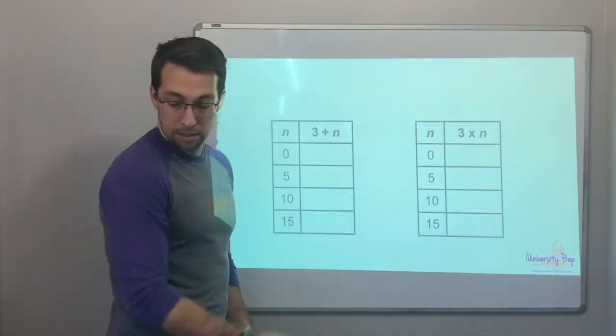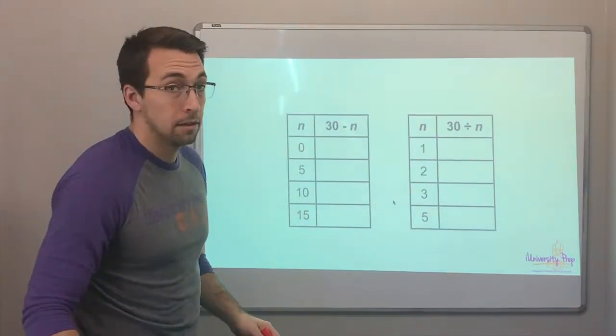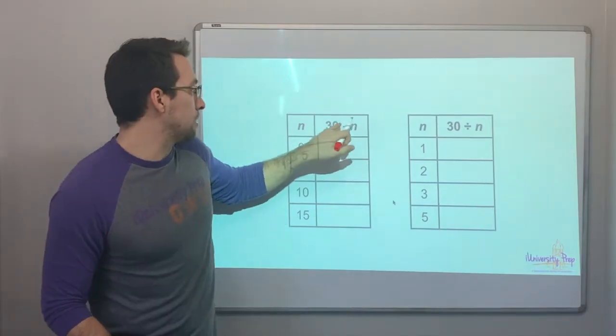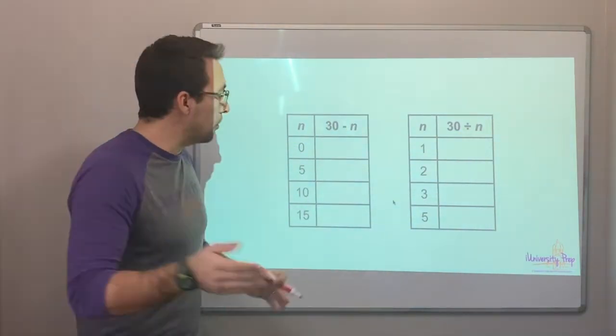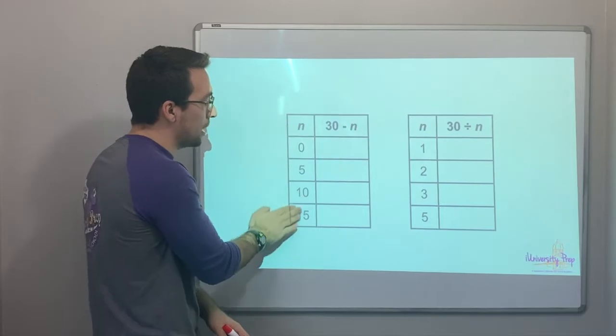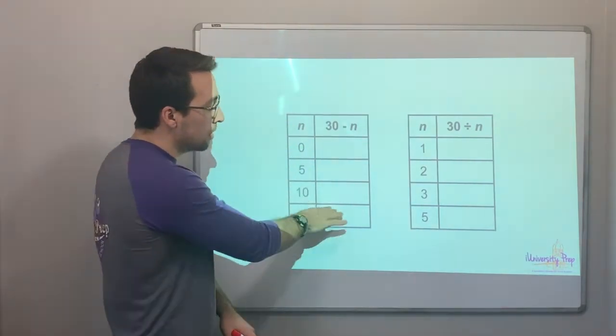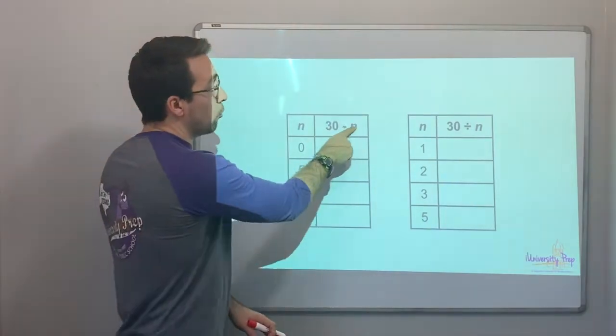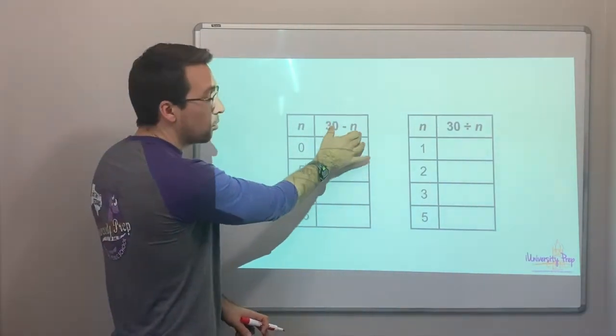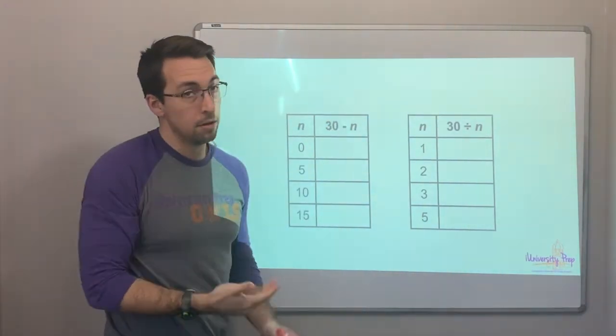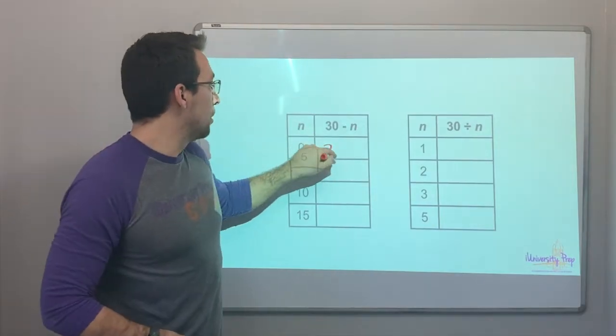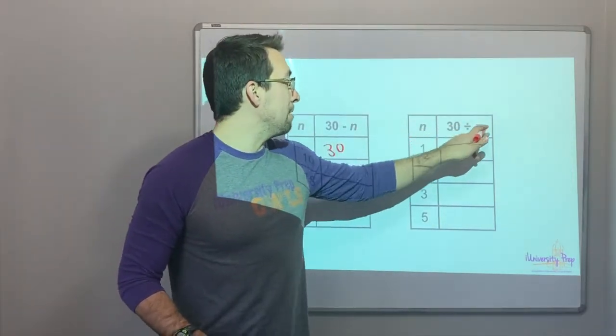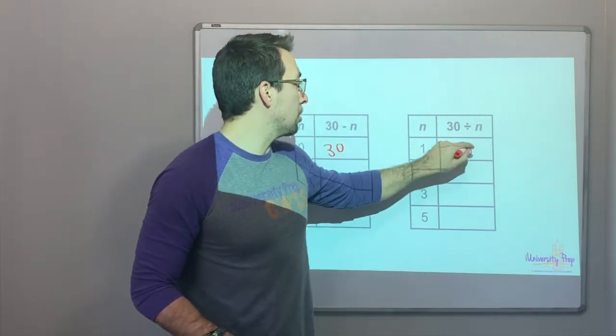All right, last page. So now subtraction and division. Again, we have a list of variables, our values for n. And so each row, we're going to substitute a different value for n. And this is our formula, this is our pattern, this is our rule for the entire table. Thirty minus zero, thirty. Thirty divided by one is thirty.